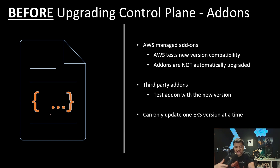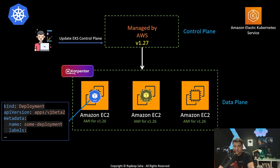For EKS, you can only update one version at a time. So if you are on 1.26, you cannot jump directly to 1.29 — you have to go from 1.26 to 1.27, then 1.27 to 1.28, and so on.